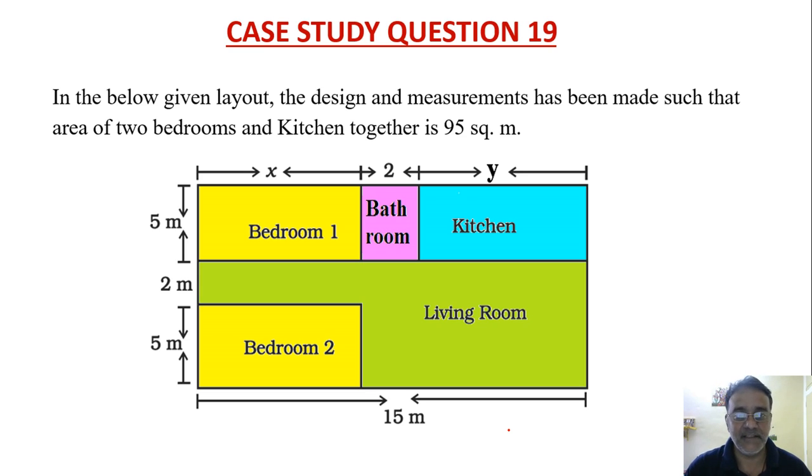Linear equation may not be given in sample paper, but linear equation in two variables also needs practice. So in the below given layout, the design and the measurements has been made such that the area of two bedrooms and kitchen together is 95 square meter in this layout.